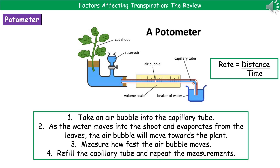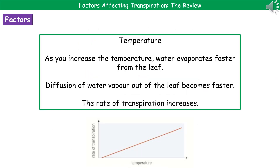It's good practice to repeat your measurements and not just do it once and take it as gospel. There are four factors that can affect the rate of transpiration in our plants.